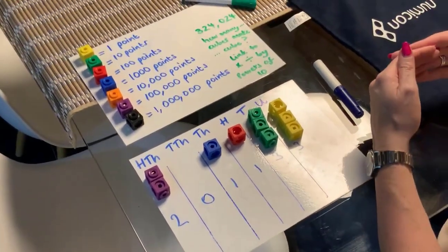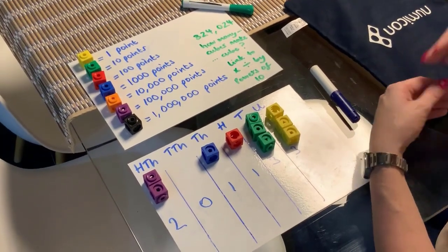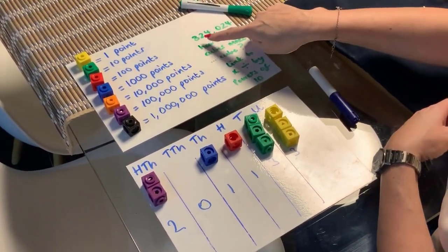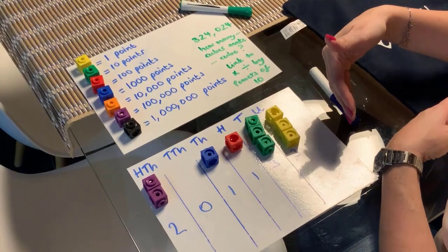So we're building lots of different numbers. And then also we need to think about another spin on this, which is giving the number and asking children to build it in cubes.